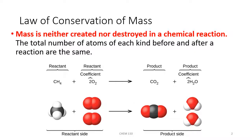All chemical reactions obey something known as the law of conservation of mass. This means that in a chemical reaction, matter or mass is neither created nor destroyed. Your reactants only change forms into something new when they become products. So if we had the combustion of methane — CH4 — and the sum of our masses of our reactants was 15 grams, the sum of the masses of our products would also be 15 grams.